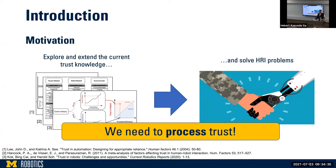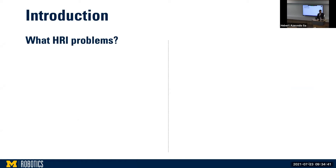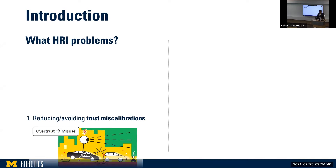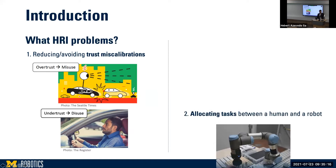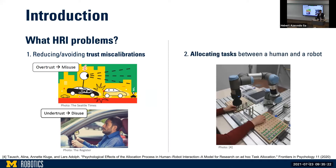I have mentioned some HRI-related problems — what kind of problems would those be? I can think of at least two. The first is the problem of reducing or avoiding trust miscalibrations, where trust miscalibrations are large differences between the human's trust and the machine's capabilities. We want to avoid these because they're likely to lead to inappropriate reliance, where over-trust leads to misuse of the vehicle and under-trust leads to its disuse. The second problem is assigning control authority between a human and a robot, dynamically allocating tasks considering their different capabilities and trust.